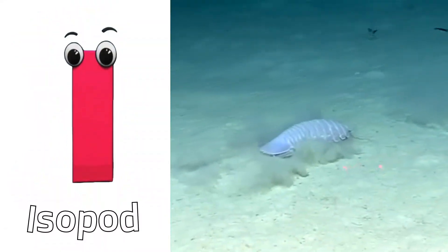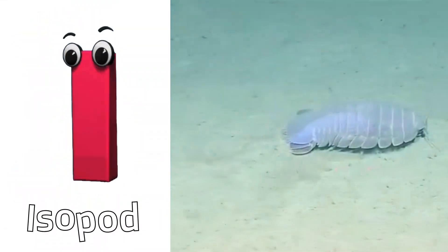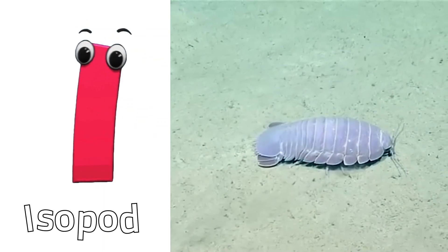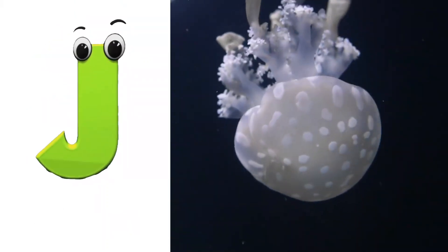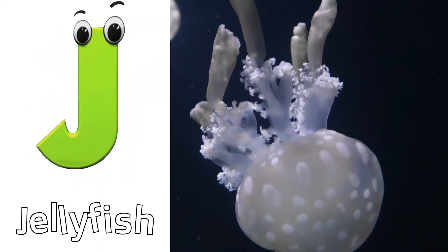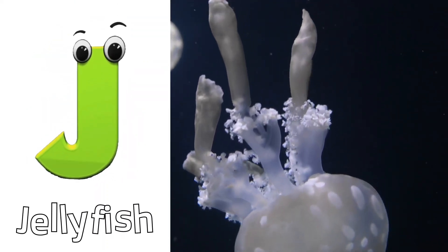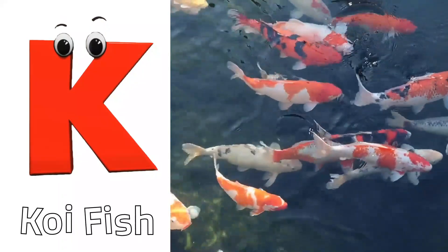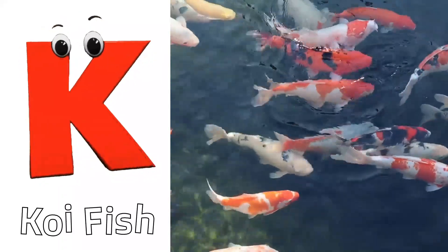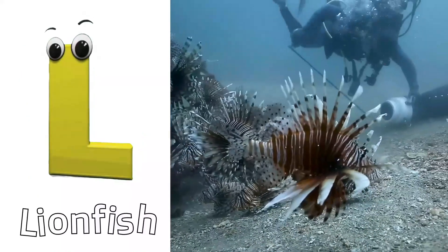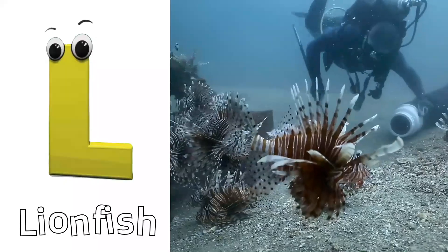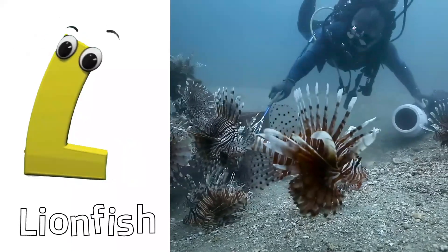I is for isopod. Eh, eh, isopod. J is for jellyfish. J, j, jellyfish. K is for koi fish. K, k, koi fish. L is for lionfish. L, l, lionfish.